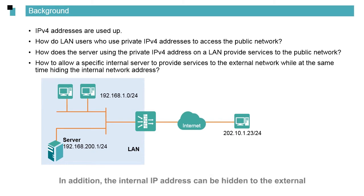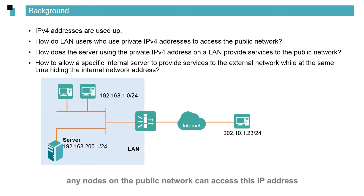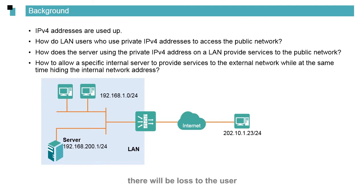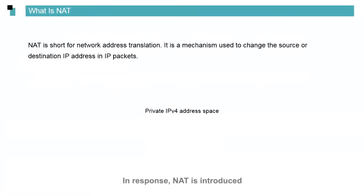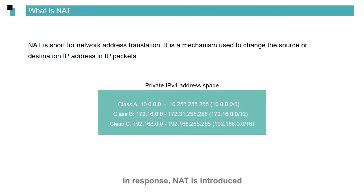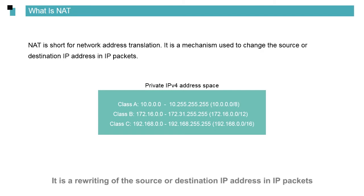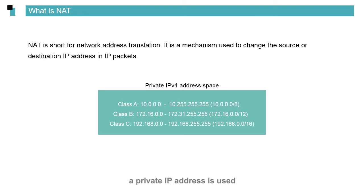In addition, the internal IP address can be hidden from the external network. For example, if a camera at home has a valid public IP address, any node on the public network can access it. If a hacker uses the public IP address to control the camera, there will be loss to the user. In response, NAT is introduced — it is a rewriting of the source or destination IP address in IP packets. In each of the Class A, Class B, and Class C IPv4 addresses, a private IP address is used.